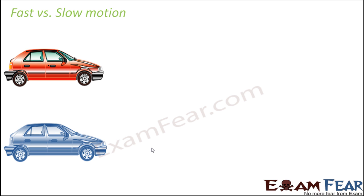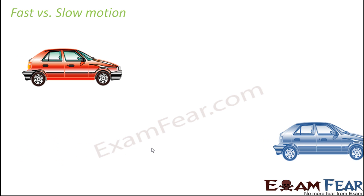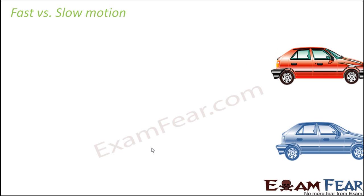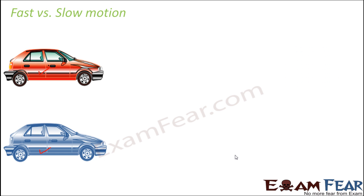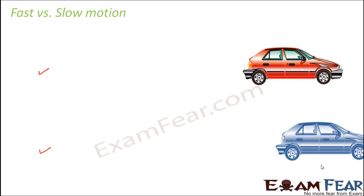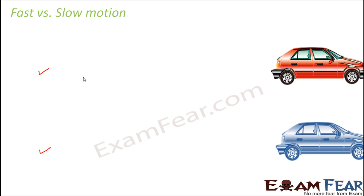When we talk about motion it becomes very important to discuss how fast or slow an object is moving. Let's take the example of a red car and a blue car. Both cars were initially at the same position, and with time they changed their position — but the blue car reached the final destination earlier than the red car. The red car was in slow motion, changing its position slowly, while the blue car was changing its position very fast.